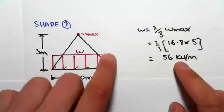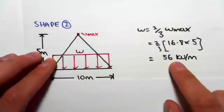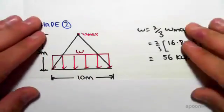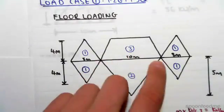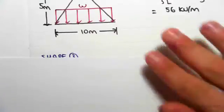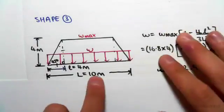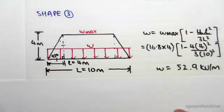So this equivalent rectangular load along our triangle is 56 kilonewtons per meter. Now shape three is this trapezium here. It's ten meters and four meters high.